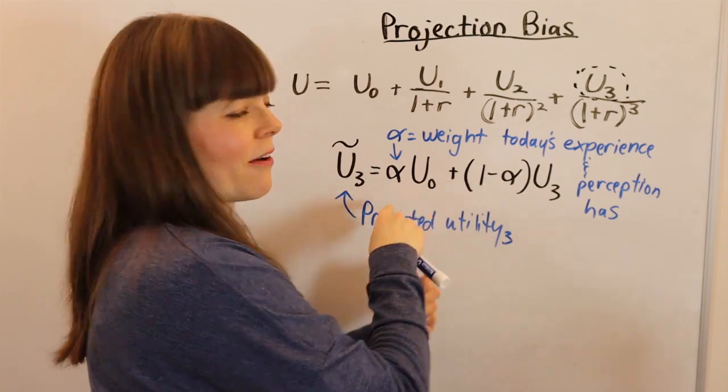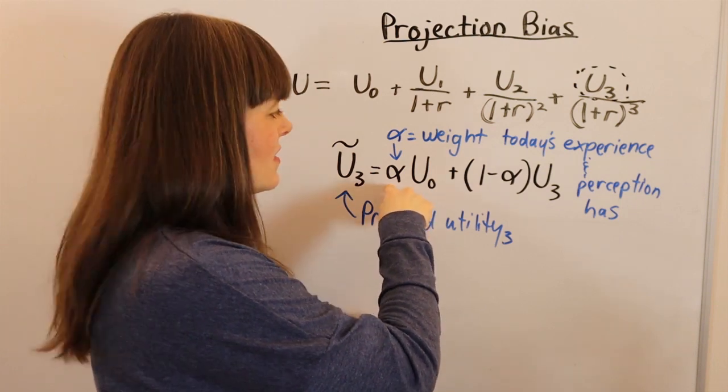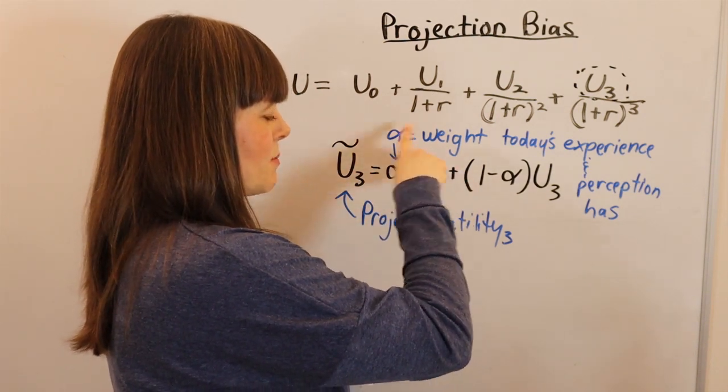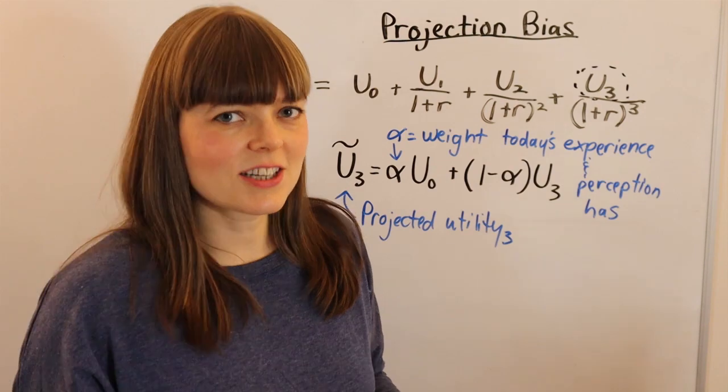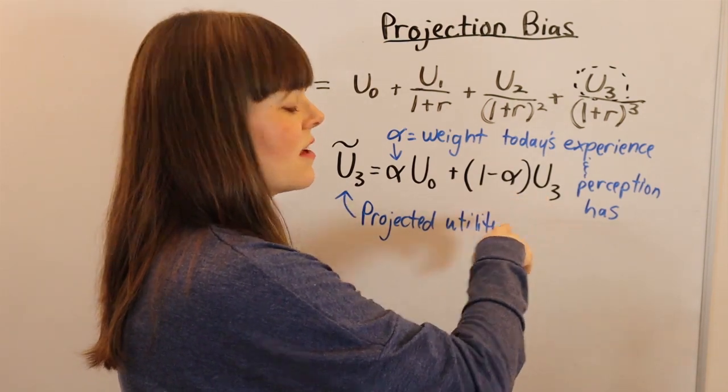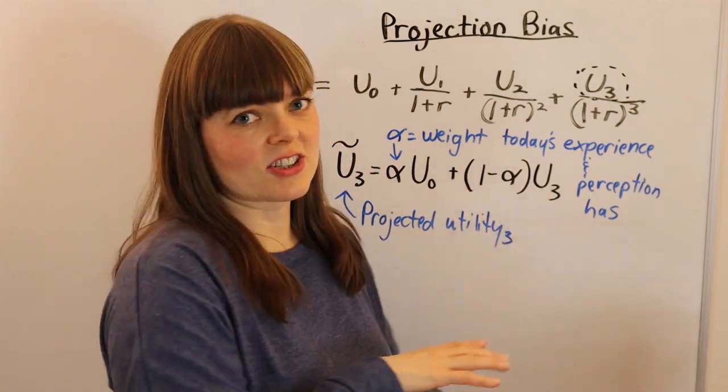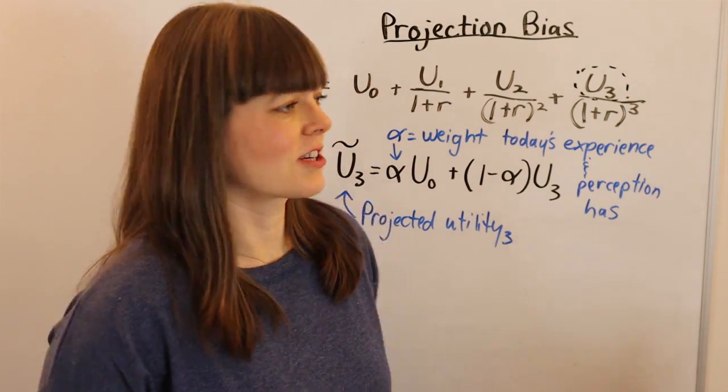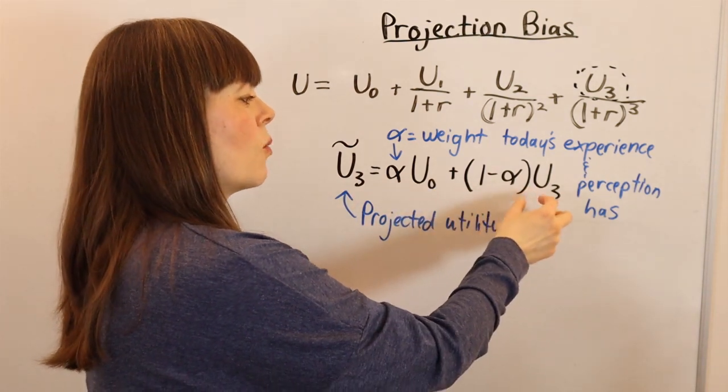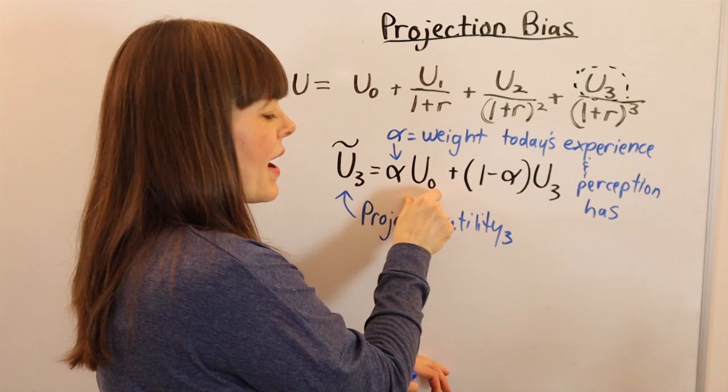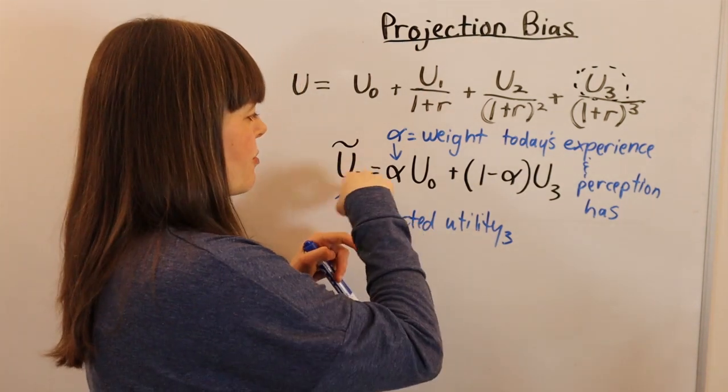You have some weight, alpha, that is the bias toward your experience, preferences, and perceptions today when projecting forward into period 3. Alpha is basically a percent. You might have a 40% bias for your present experiences and perception versus a 60% weight toward what the future should be - the real experience of people who've been out for 10 years saying it's much better than you think. So your projected utility is some mixture of what it actually will be in the future and a bias toward what you're thinking, feeling, and experiencing in the moment.